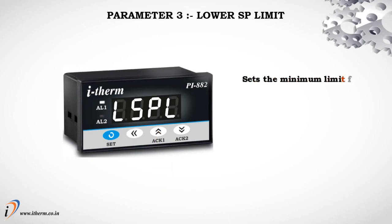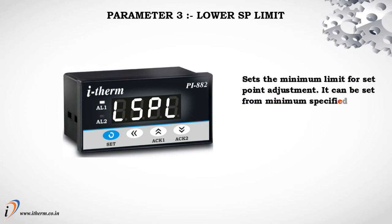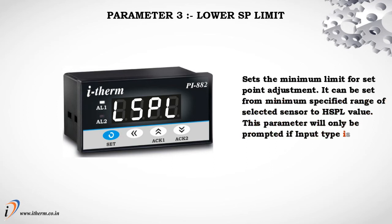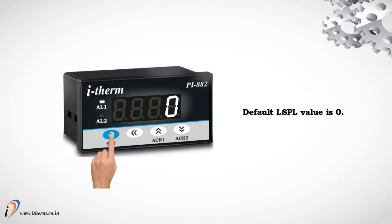Parameter 3: Lower Setpoint Limit (LSPL). This sets the minimum limit for setpoint adjustment. It can be set from the minimum specified range of the selected sensor to the HSPL value. This parameter will only be prompted if the input type is thermocouple or RTD. Default LSPL value is 0.